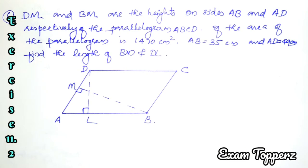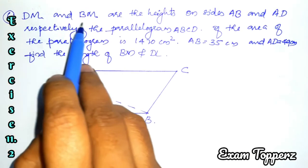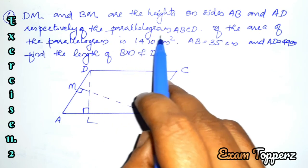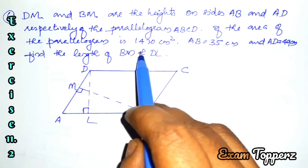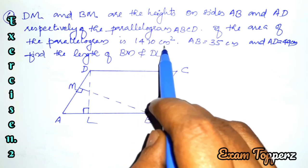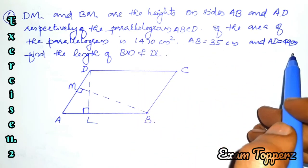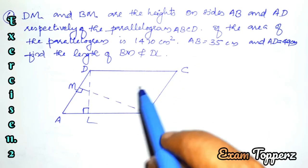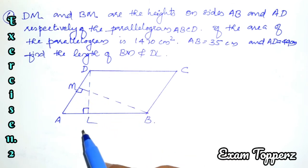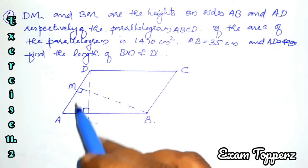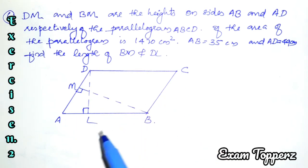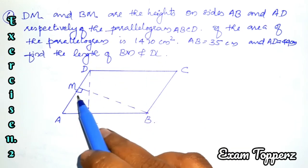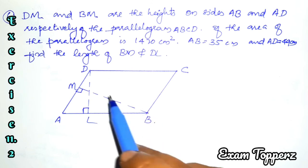Exercise 11.2, question 6: DM and BM are the heights on sides AB and AD respectively of the parallelogram ABCD. If the area of the parallelogram is 1470 cm², AB = 35 cm, and AD = 49 cm, find the length of BM and DL.